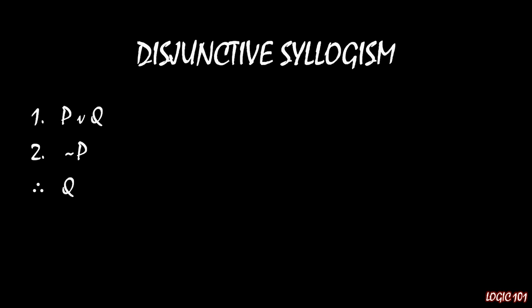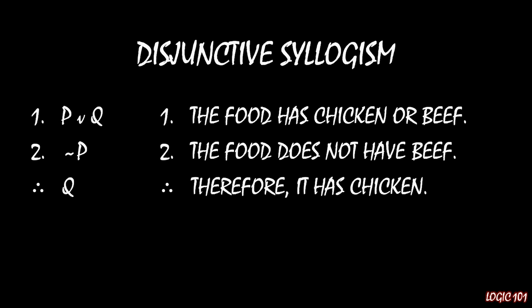To understand how this works, it helps to see an example, though this is very straightforward. Imagine the first premise is the food has chicken or beef, and the second premise is the food does not have beef. If those two things are true, we can conclude that the food must have chicken. The disjunction tells us at least one of those two things must be true. So if it doesn't have beef, it must have chicken.